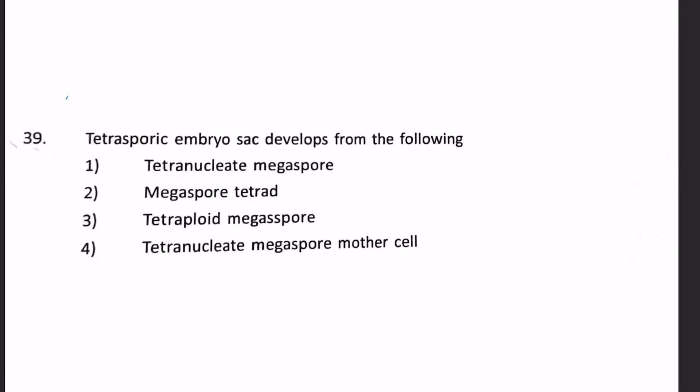Tetrasporic embryo sac develops from: 1. Tetranucleate megaspore, 2. Megaspore tetrad, 3. Tetraploid megaspore, 4. Tetranucleate megaspore mother cell. A tetrasporic embryo sac means an embryo sac developed from 4 megaspores. Therefore, number 2, which is a megaspore tetrad, will be our answer.